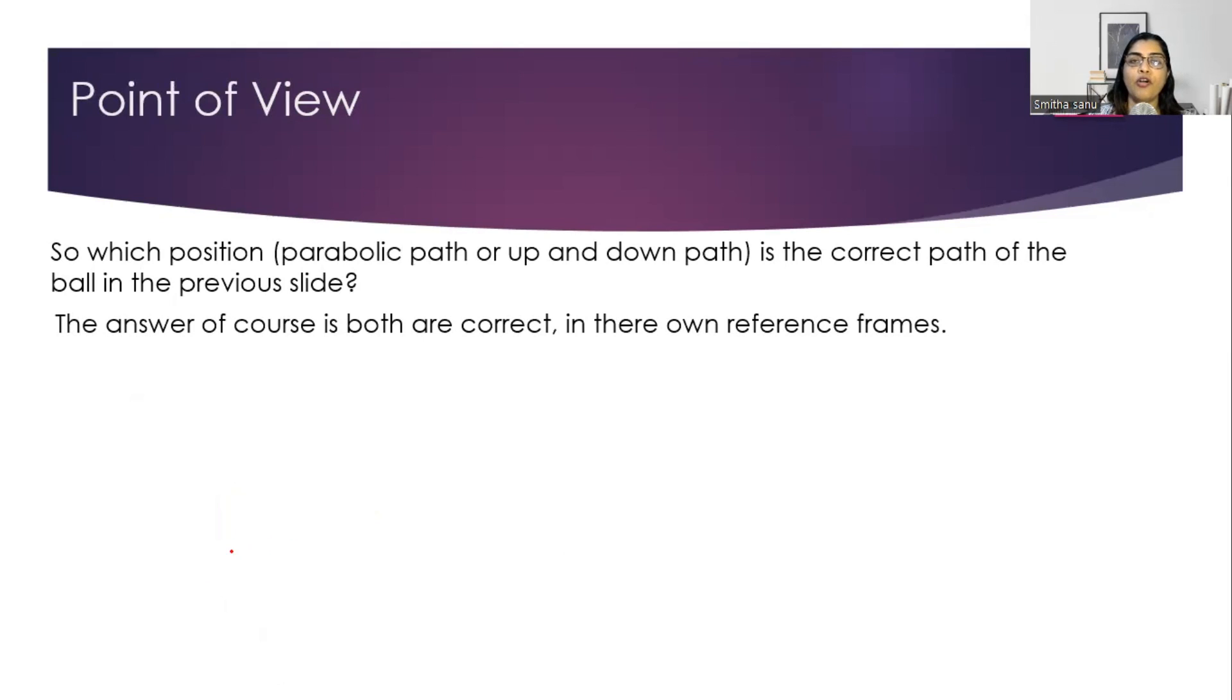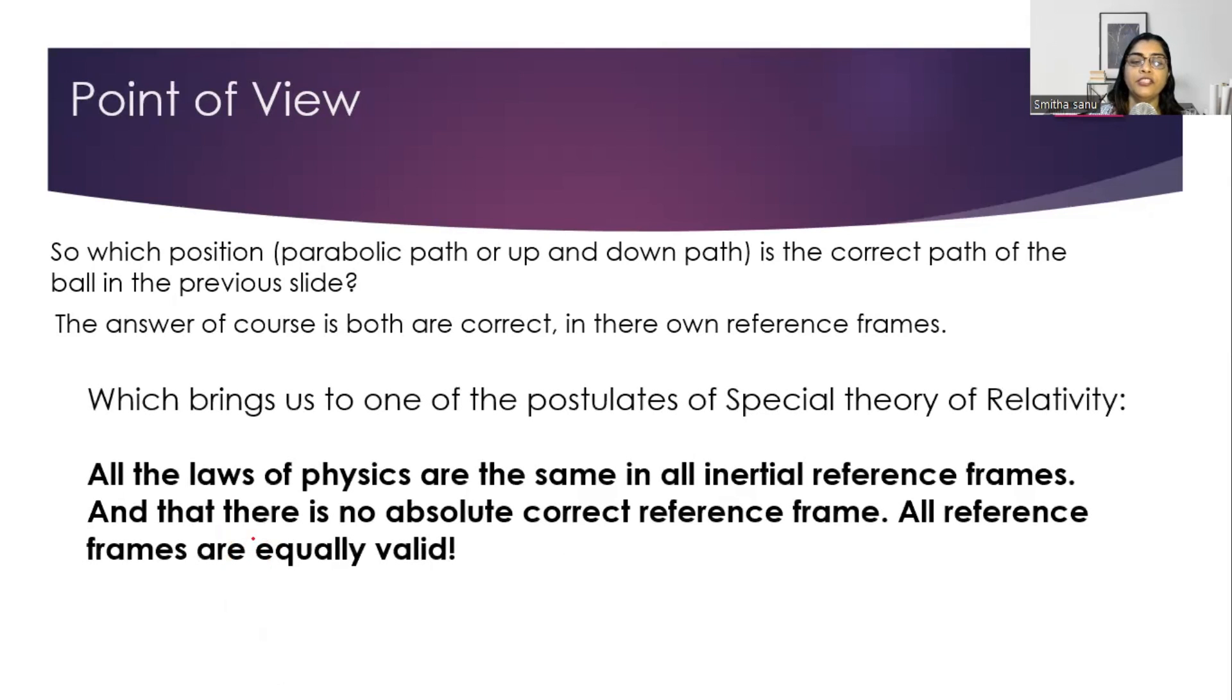Both were correct according to their frame of reference. Thus, came the first law of special theory of relativity, which tells all laws of physics are same in all inertial frames of reference. There is no absolute or correct reference frame. All reference frames are equally valid. So there is no preferred frame where the observation is correct and the other frame where the observation is wrong. Each one will have their point of view.